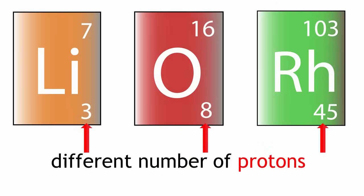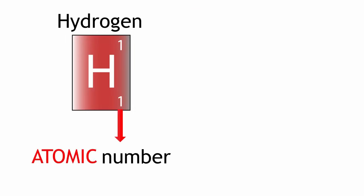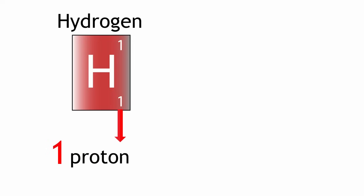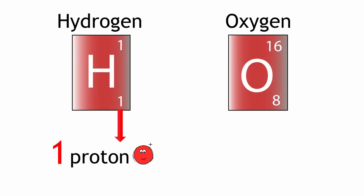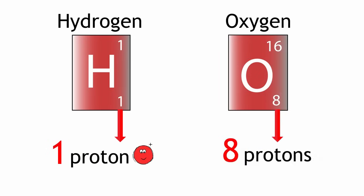For example, an atom of hydrogen has an atomic number of 1, because it has 1 proton, but an atom of oxygen has an atomic number of 8, because it has 8 protons.